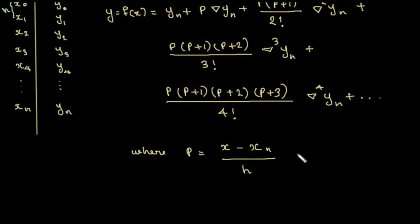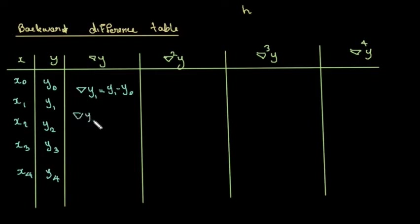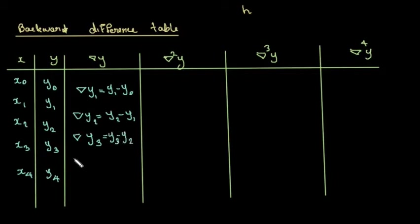Now we construct the backward difference table. First-order differences: Δy1 = y1 − y0, Δy2 = y2 − y1, Δy3 = y3 − y2, Δy4 = y4 − y3.